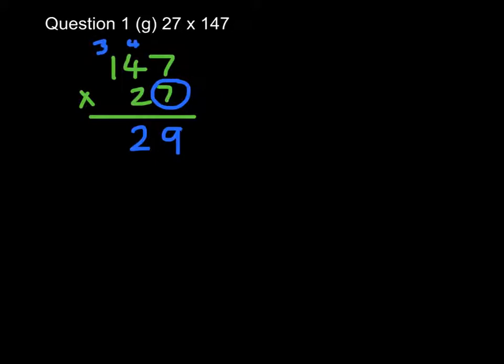Right, so our last multiplication is 147 times 27. I'm going to write it with the 27 down, 147 up. I'm going to multiply by the 7 units first. 7 times 7 is 49, put down my 9, carry my 4. 7 times 4 is 28, add 4 is 32. Put down my 2, carry my 3. 7 times 1 is 7, add 3, 10.